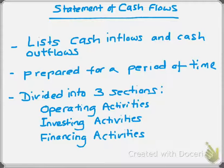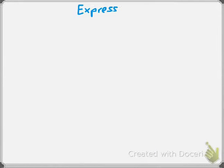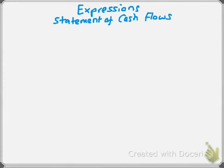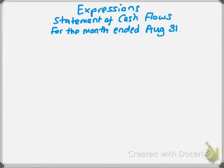We're going to talk about the format in a little bit. Just like all the other financial statements, we start with the header information. You're going to have the name of the company, the name of the statement — which is the statement of cash flows — and then the date. It's for the month ended August 31st.